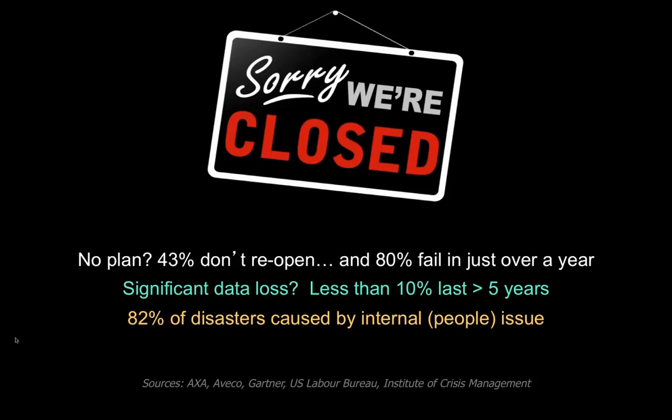82% of disasters are caused by internal or people issues — and that's actually good news, because it's the sort of thing you can do something about. Even a telecommunications failure can often be traced back to a training or process issue: someone not trained well who cut the wrong cable. That is in a way good news because we can actually do something about those events.